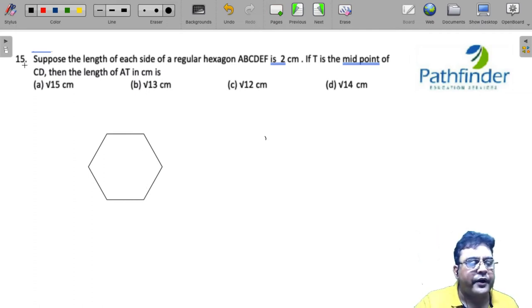Another question from CAT 2021 slot 1. Suppose the length of each side of a regular hexagon ABCDEF is 2 centimeters. If T is the midpoint of CD, then what is the length of AT in centimeter?